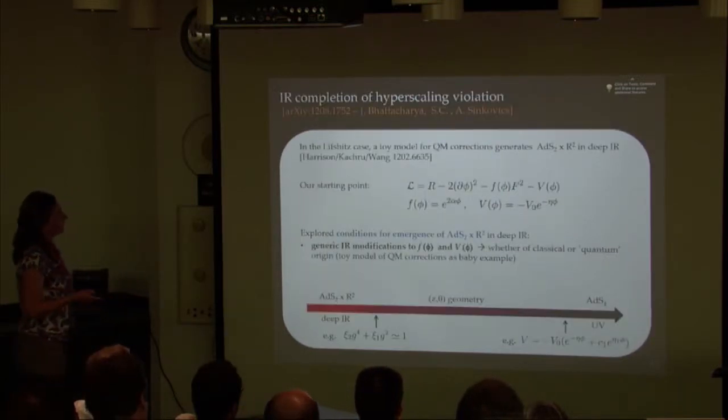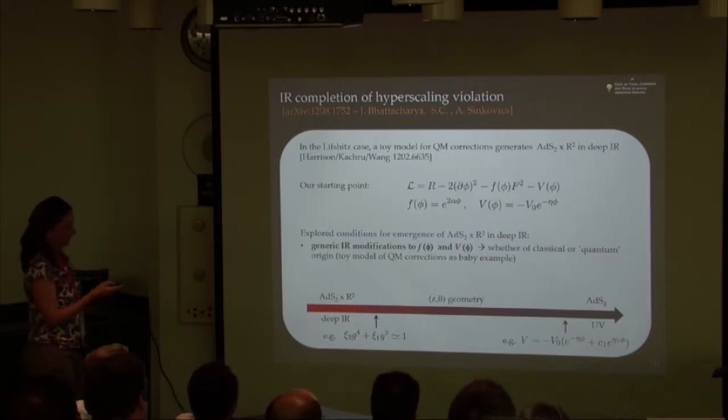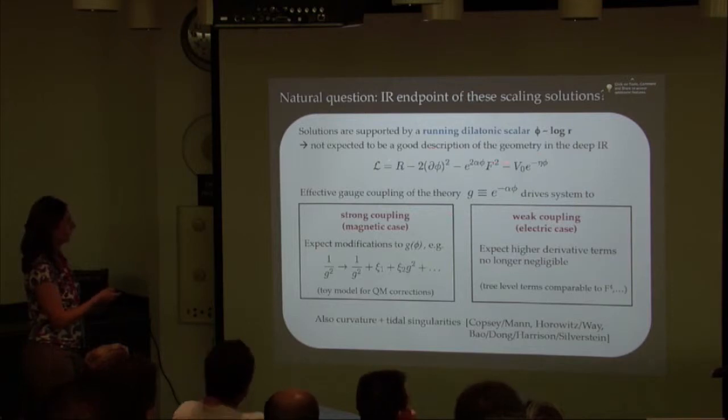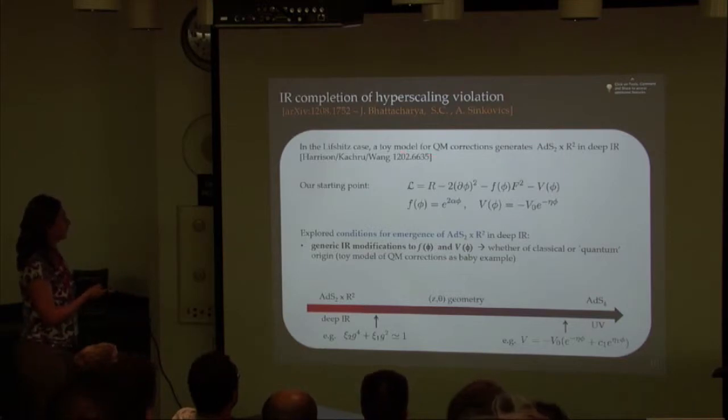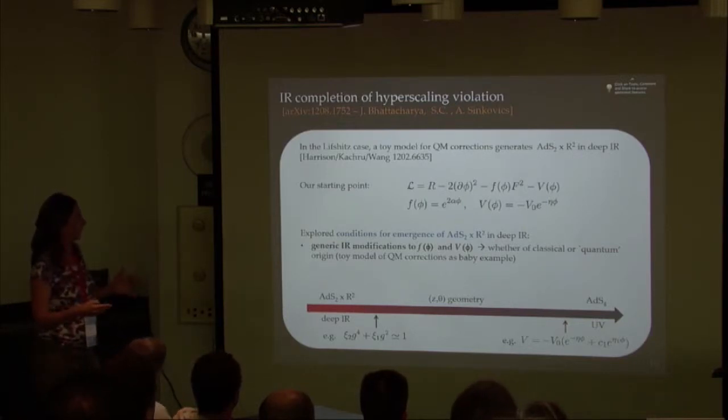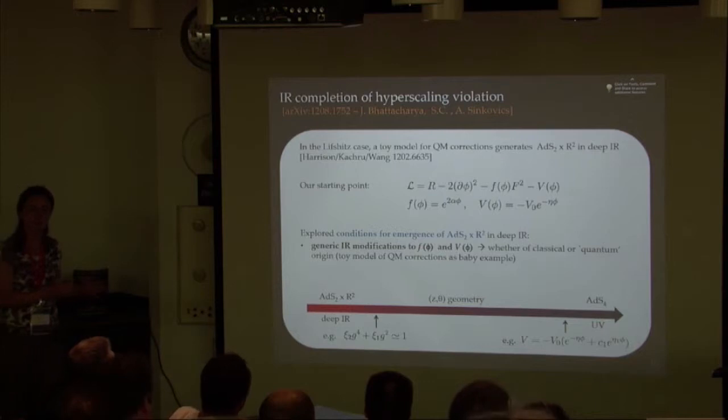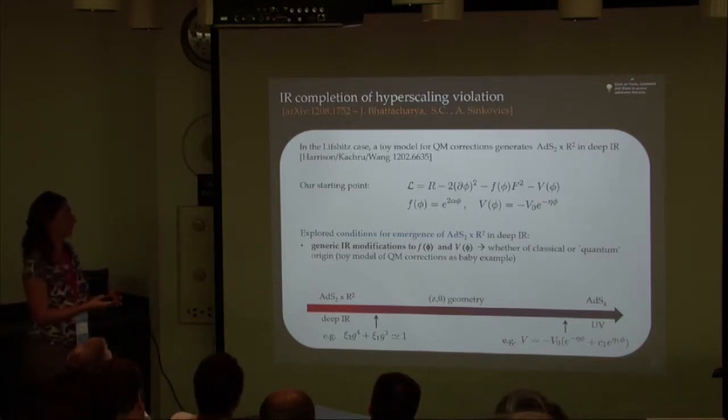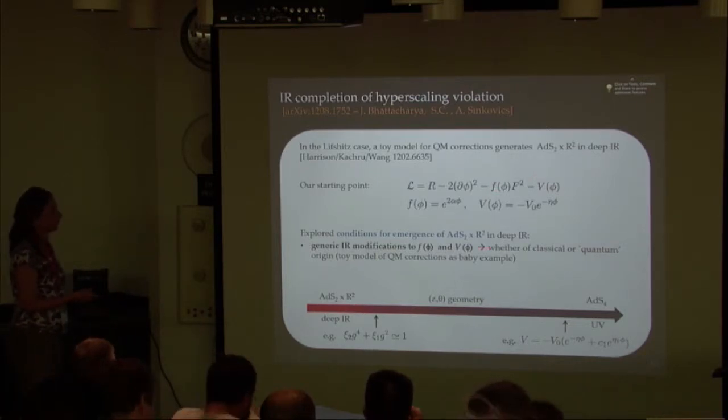There are also problems with singularities in these solutions. Gary was one of the first people who pointed out singularities associated with them. One motivation for work I've done with Jyoti Bhattacharya and Sinkovics a couple years ago was that if you looked at a toy model for quantum corrections to this system, you found that the solutions were being driven to AdS2 times the plane in the IR. This was pointed out by Gouteraux and Kiritsis.